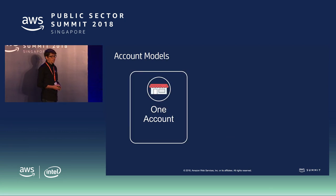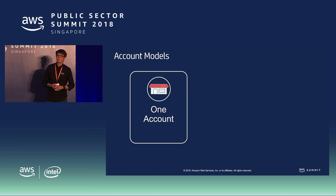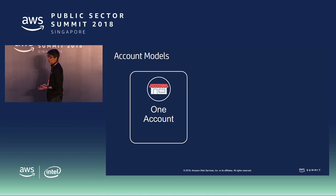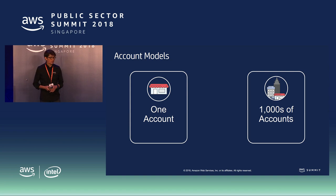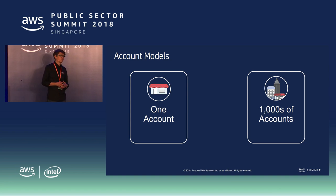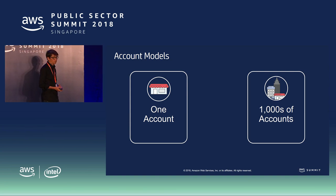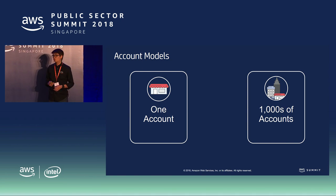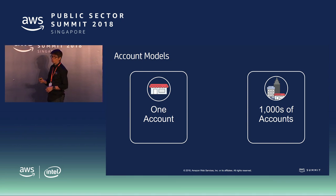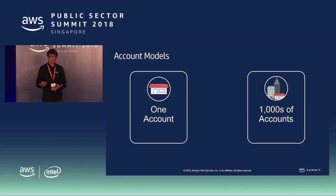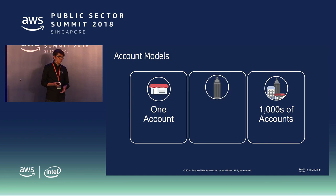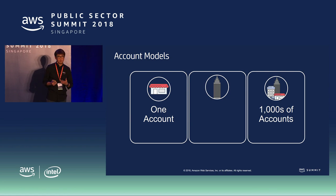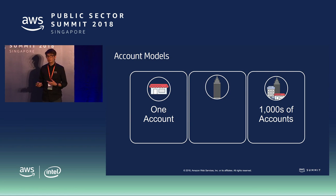Typically, a customer starts with one account — deploying VPCs into that account, provisioning resources. But there are customers that grow to hundreds or even thousands of accounts. There is some automation you have to do if you want to provision that many accounts, because you have to baseline them. Most customers today are somewhere in between these two models.